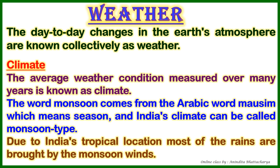Remember, India's climate can be called a monsoon type. The word 'monsoon' is derived from the Arabic word 'moosom,' which means season. Due to India's tropical location, most of the rains are brought by the monsoon winds.